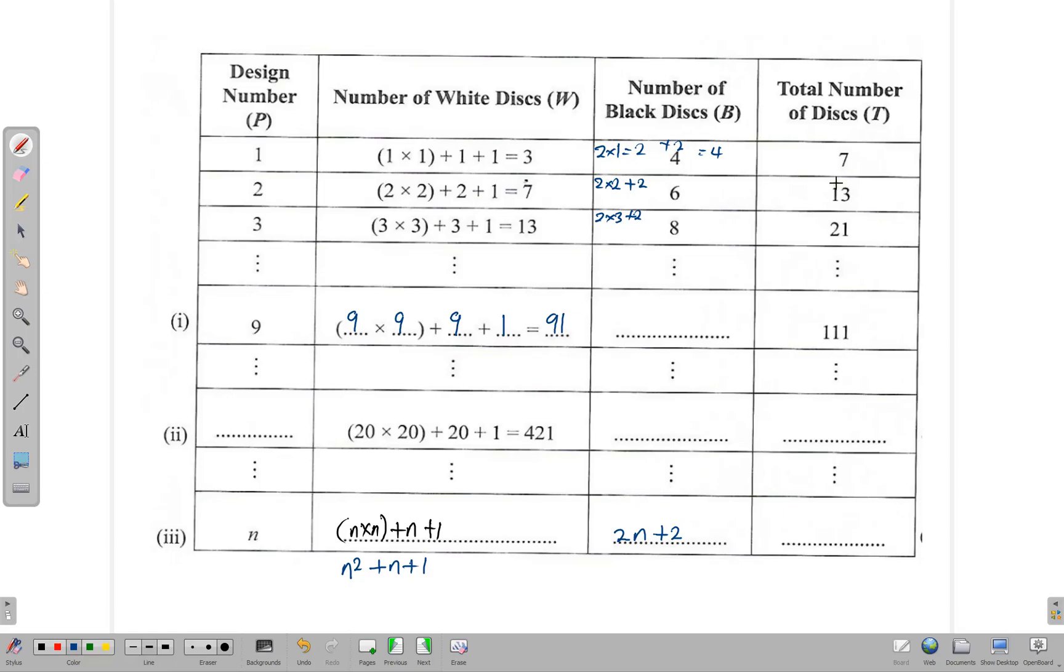The total number of disks is given by an addition. Notice here we have seven disks. So it's three plus four gives you seven. Seven plus six gives you 13. 13 plus eight gives you 21 and so forth. So by the time we get here, we're supposed to add n squared plus n plus 1 plus 2n plus 2. And that gives us n squared plus 3n plus 3. And that would be the generalization for that.